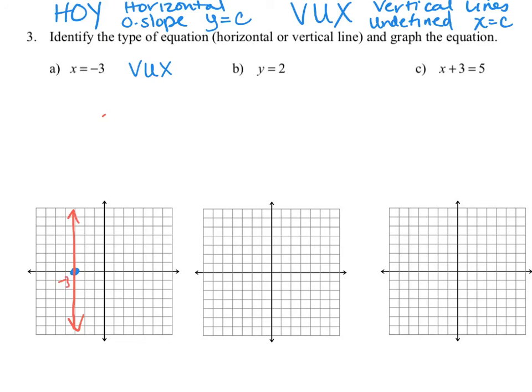The first equation only has an x, so it follows VUX — it's a vertical line with undefined slope. That means the graph is only going to cross through the x-axis at negative 3 and not through the y-axis. The second equation is y equals 2, which corresponds to HOY: horizontal lines with zero slope only have y's in them. This will only go through the y-axis at positive 2, so we plot the y-intercept and draw the horizontal line.